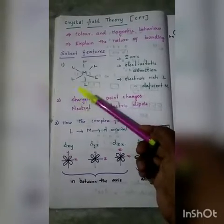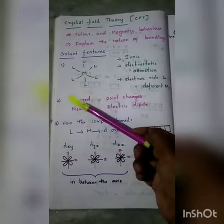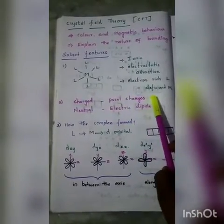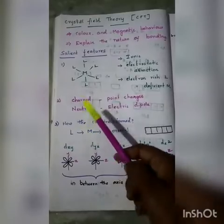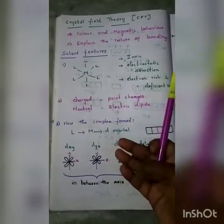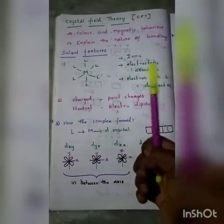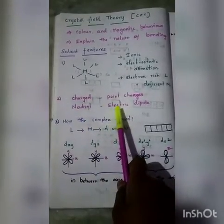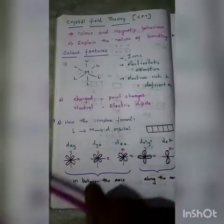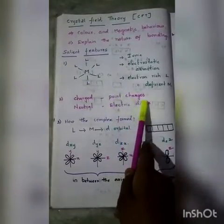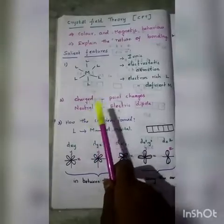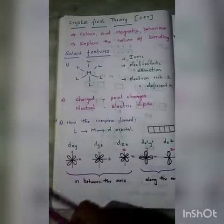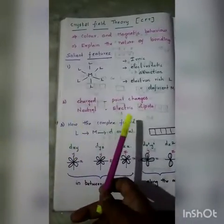The second point: if the metal atom or the ligand is charged, they are considered to be point charges. We know that we have three types of ligands — negative ligand, positive ligand, and the neutral ligand. If it is neutral, they are considered to be electric dipoles. So if it is charged it is called point charges; if it is neutral it is considered to be electric dipole.